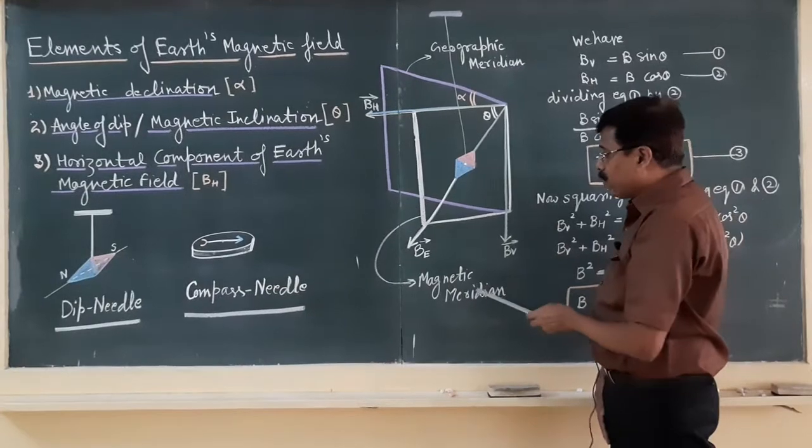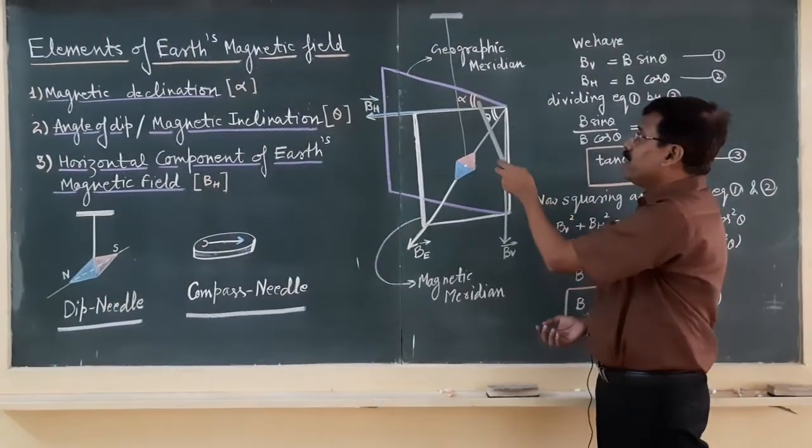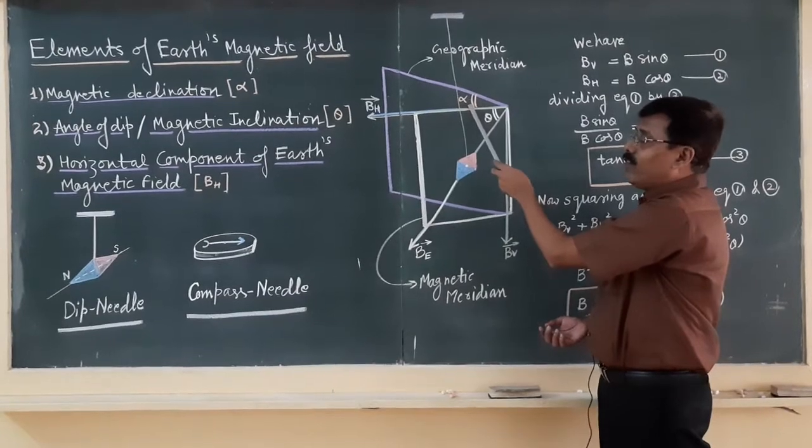So the angle between the magnetic meridian at any place on the earth's surface and geographic meridian is termed as the angle of declination.